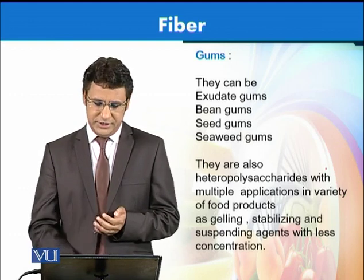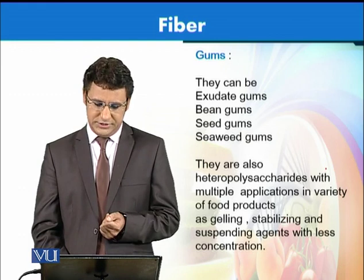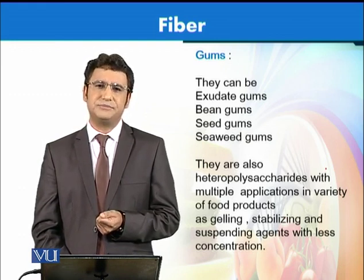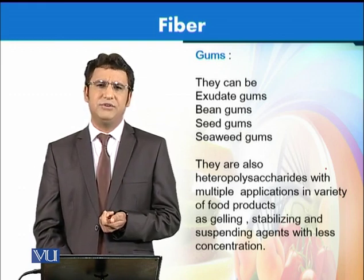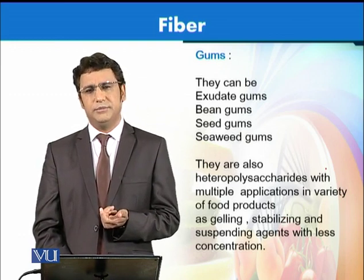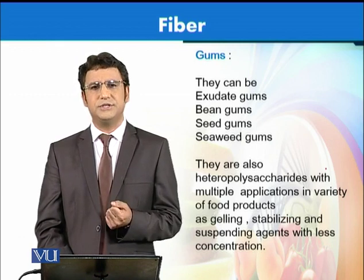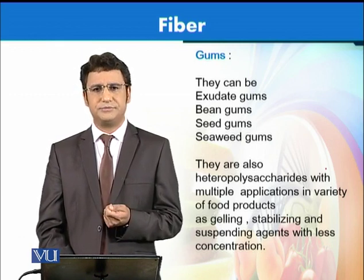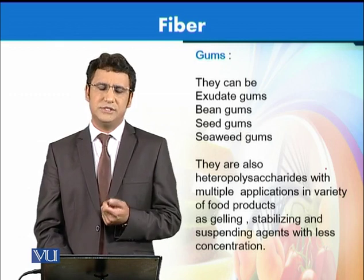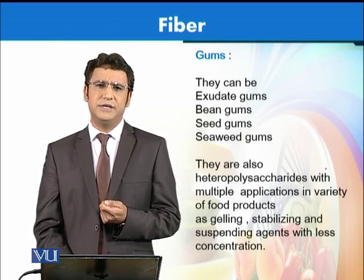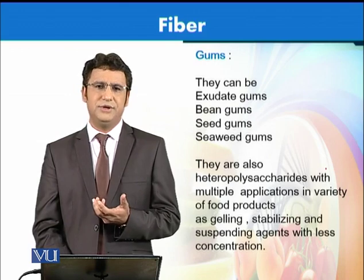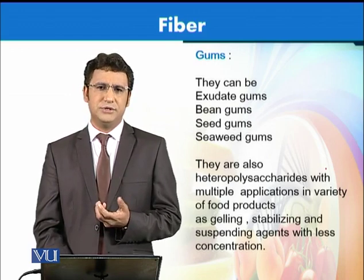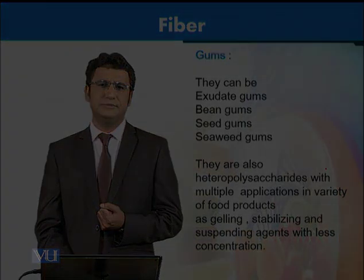Gums are another type of soluble fiber that can come from different sources like beans, seeds, and seaweed. They are all hetero-polysaccharides and have a very important role to play in multiple applications in the food industry, especially in most fruit juices and liquid products like sauces. They add texture, act as gelling agents, and stabilize solutions, giving them plenty of food applications.